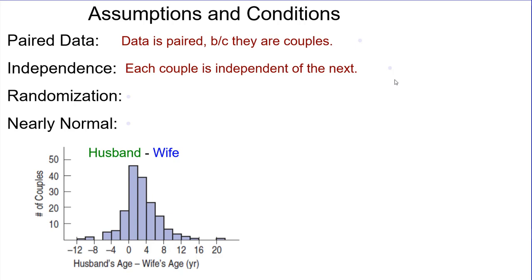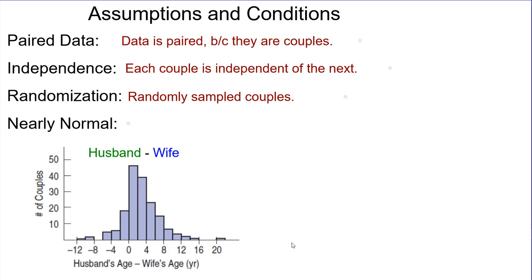Randomization: were they a random sample? They were randomly sampled — British couples — so we expect them to be representative of all couples. Nearly normal: if we look at the histogram of the differences, it looks like it comes from a normal population. Would the population of all British couples also be nearly normally distributed? Probably so. But even if they were skewed by these outliers, our standard deviation might be larger than we'd normally expect.